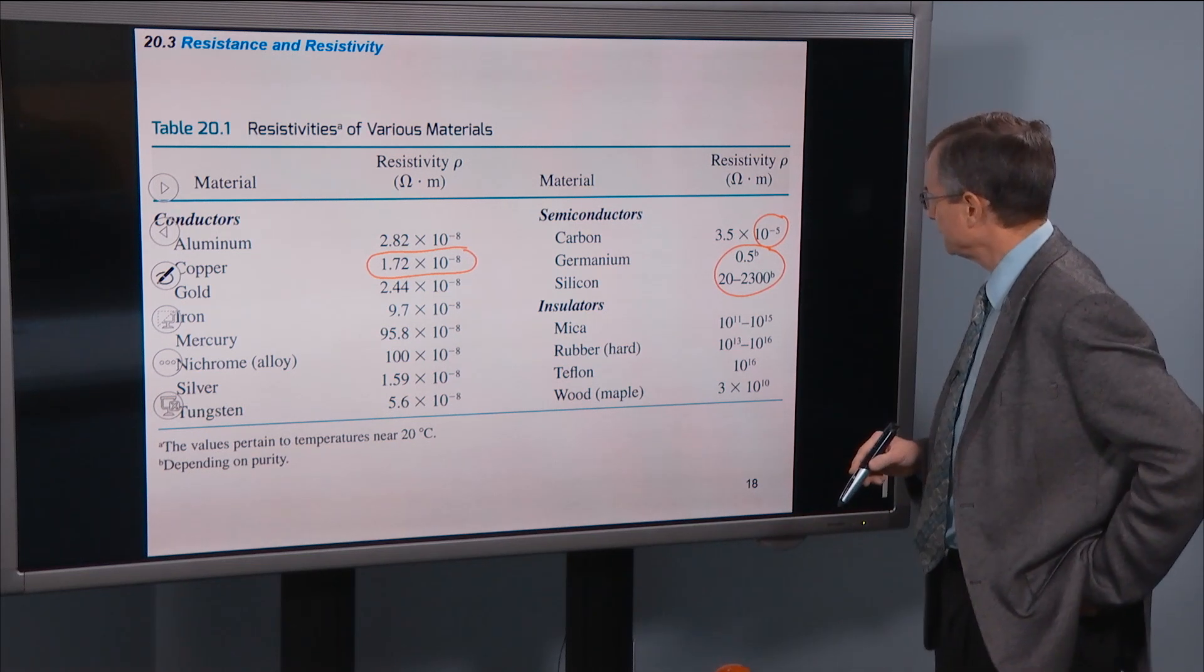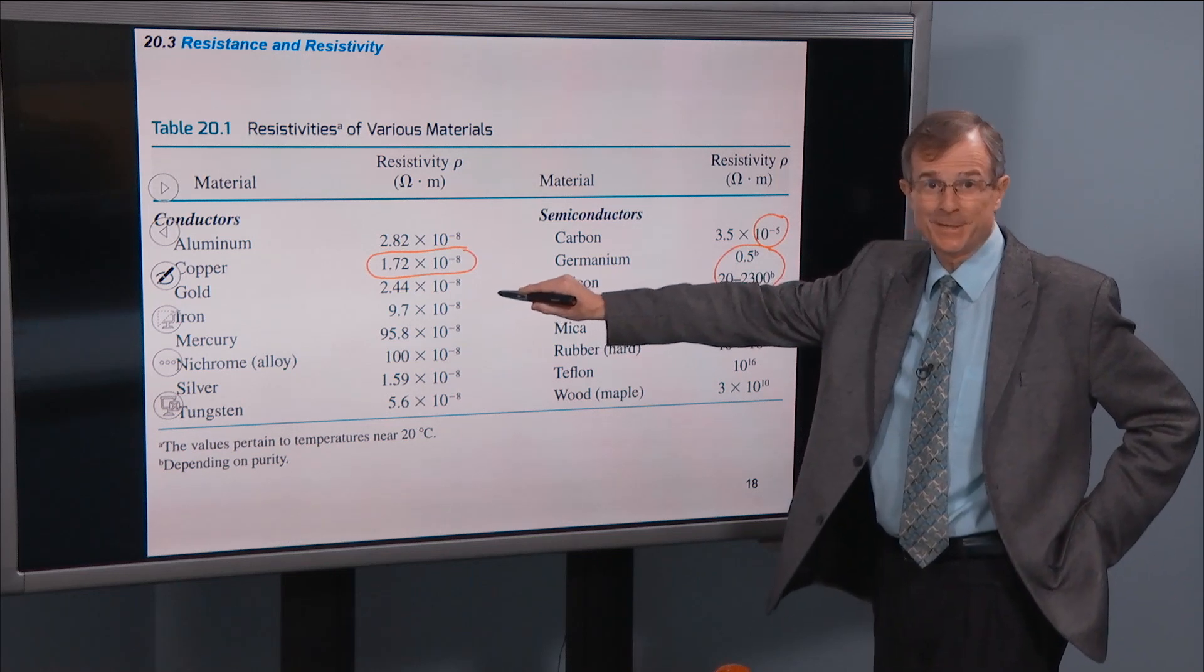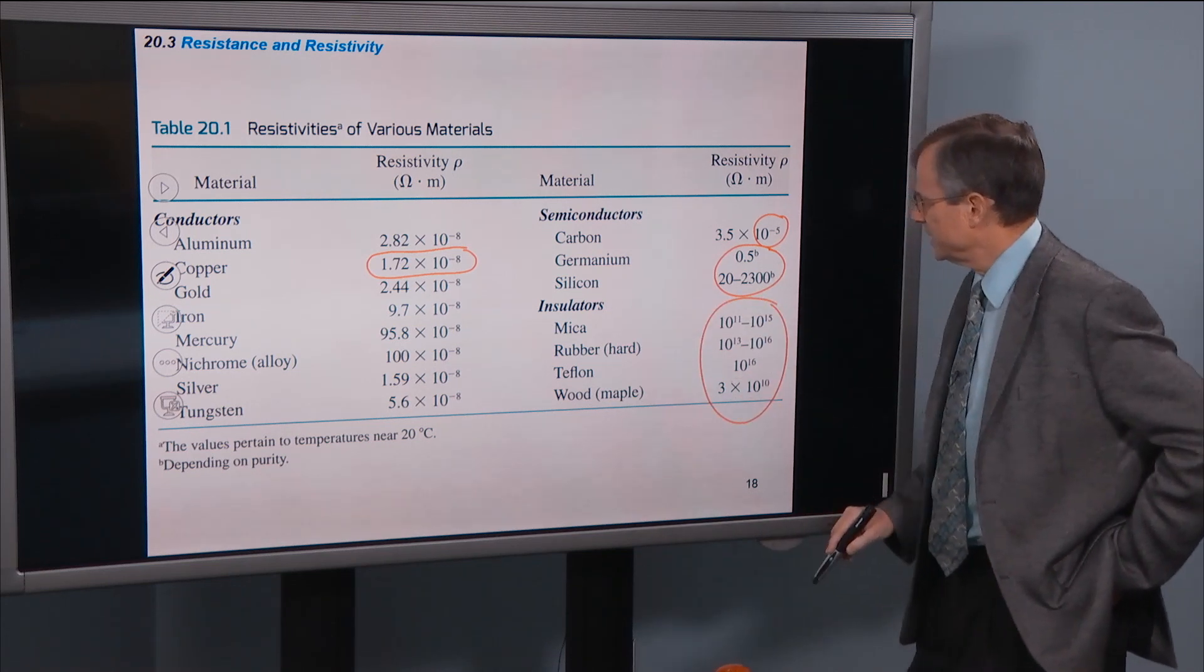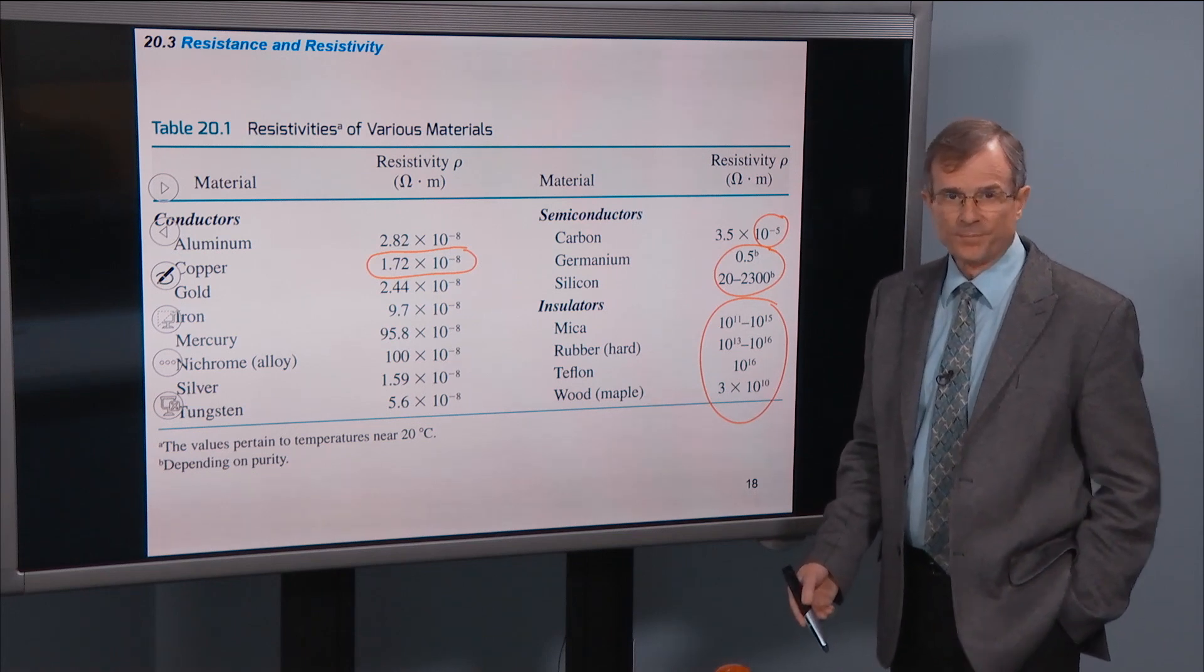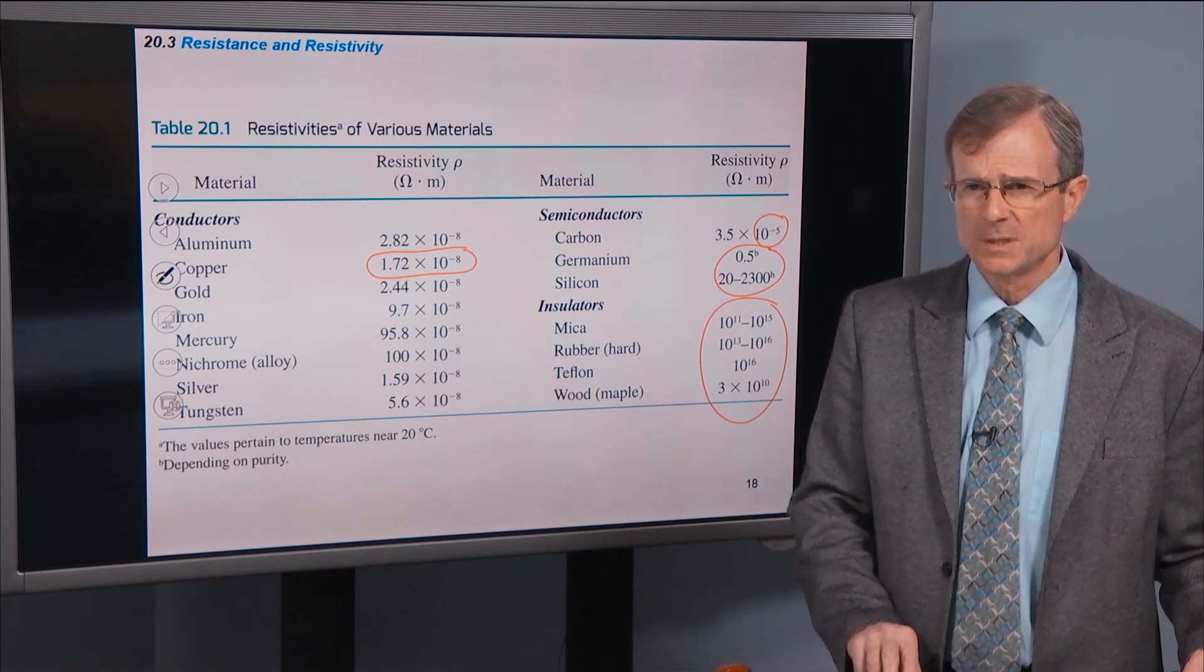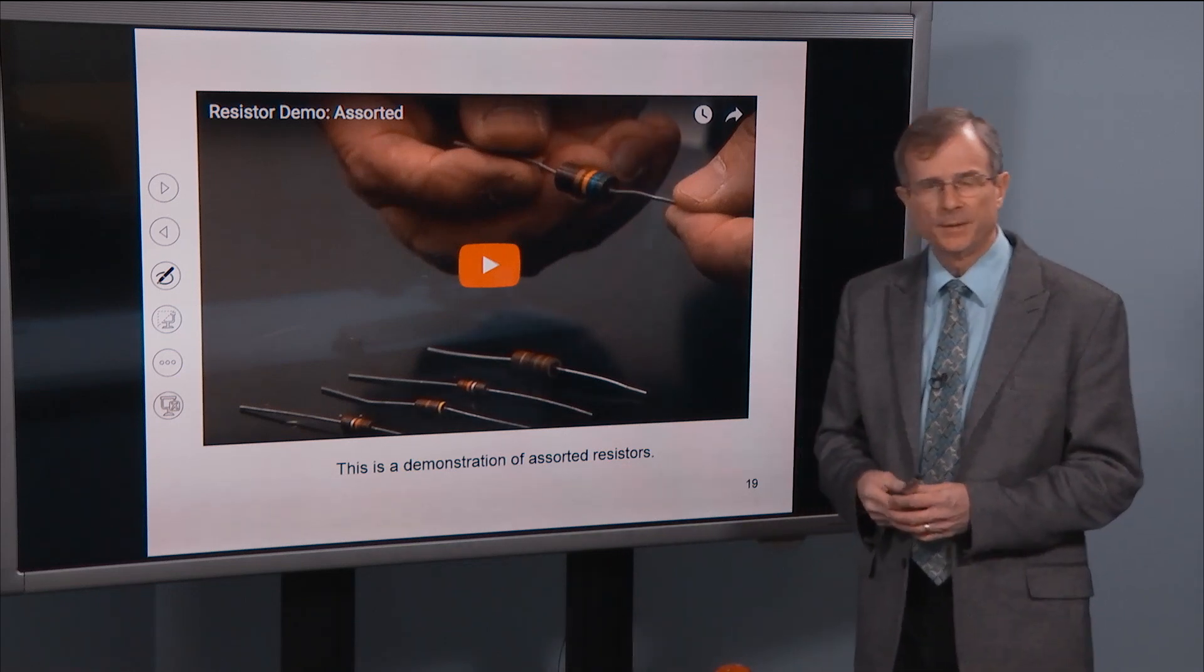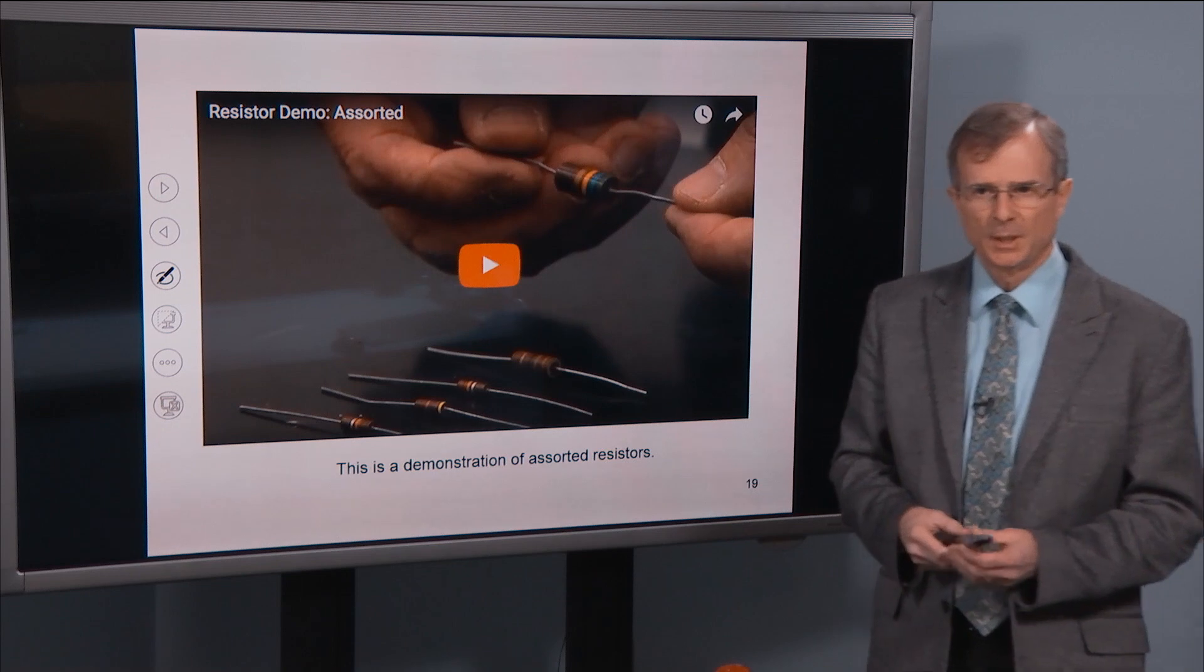So instead of an exponent of 10 to the minus 8, we're talking about 10 to the minus 5, or 10 to the 1 for that matter. And then insulators have resistivities with positive exponents. So tough to get any current through those insulators. And we talked about that before, the difference between a conductor and an insulator. And this, in the last chapter, and this puts some flesh on the bones there.